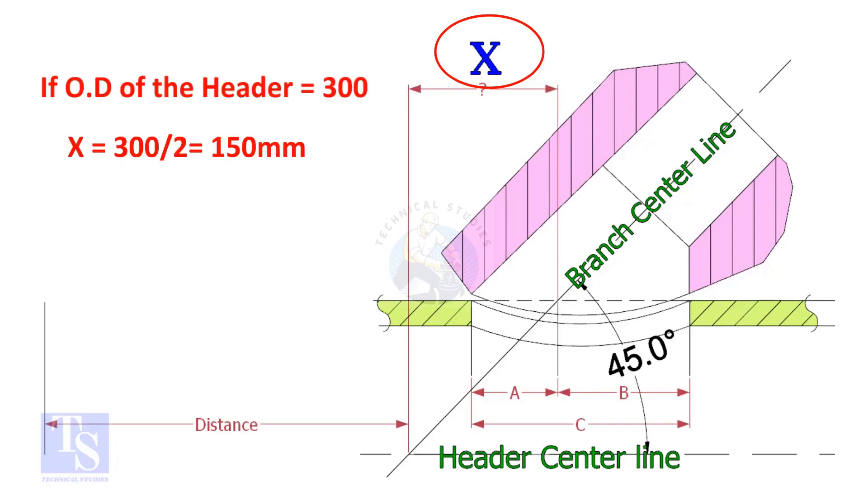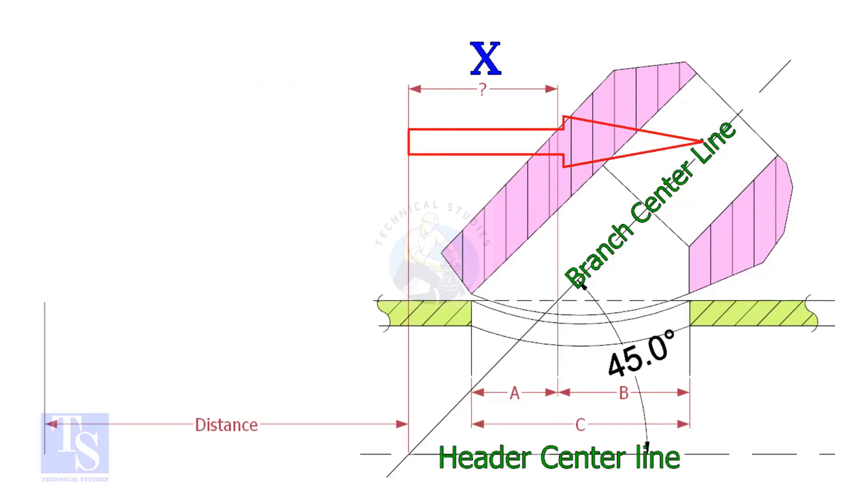Suppose the OD of the header is 400 millimeters, then the value of X will be 200 millimeters. Mark the half OD on the direction of the laterolette. Mistakes happen when marking the direction of the laterolette.